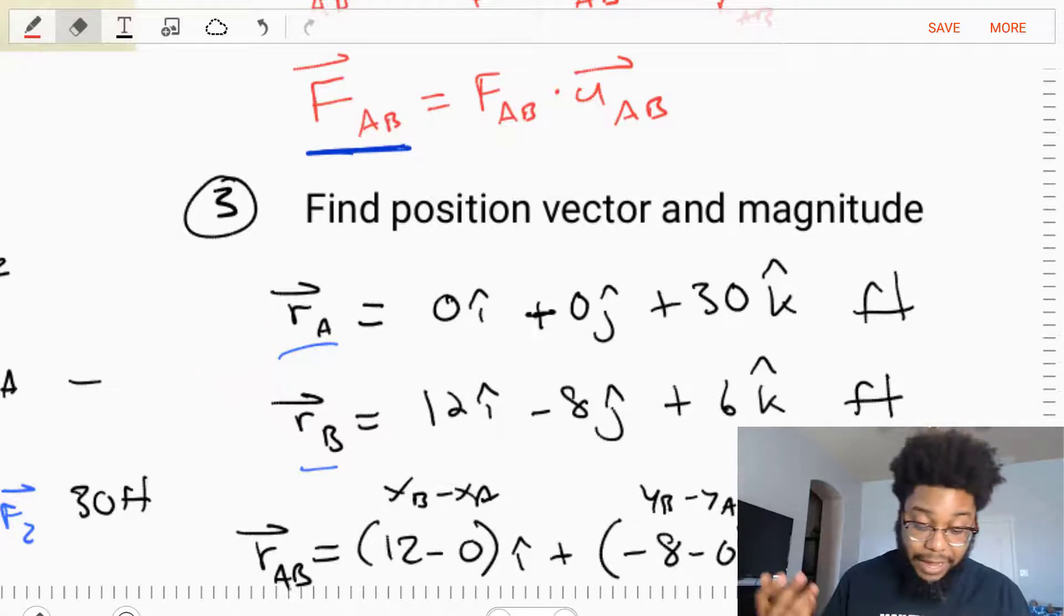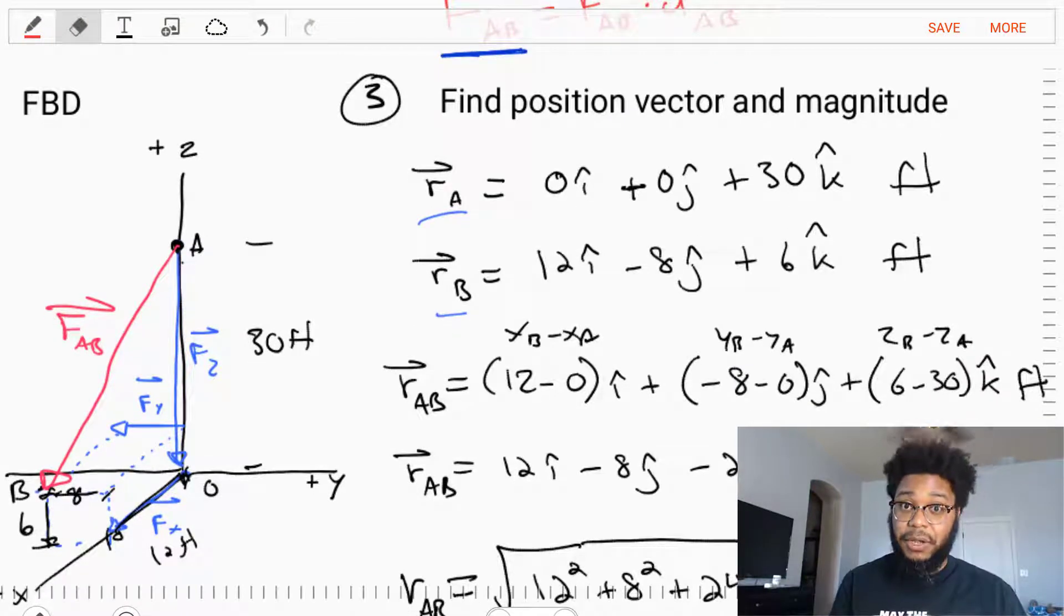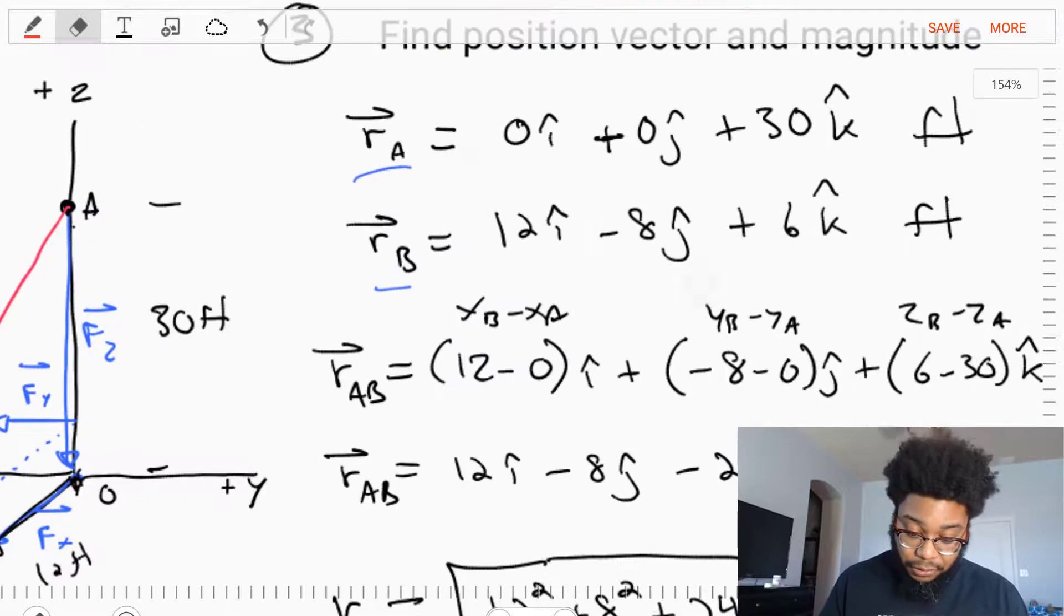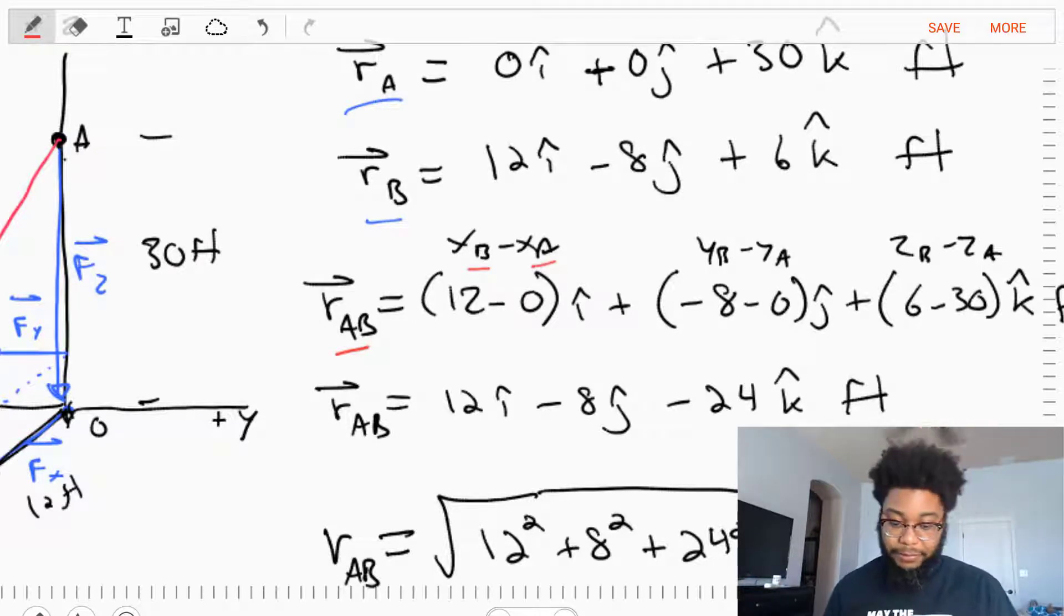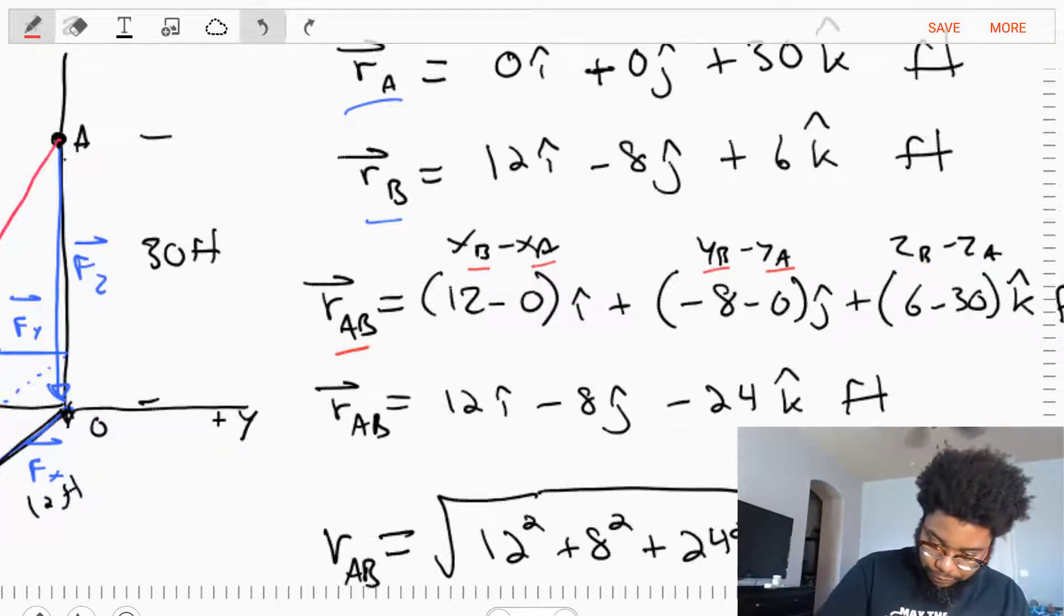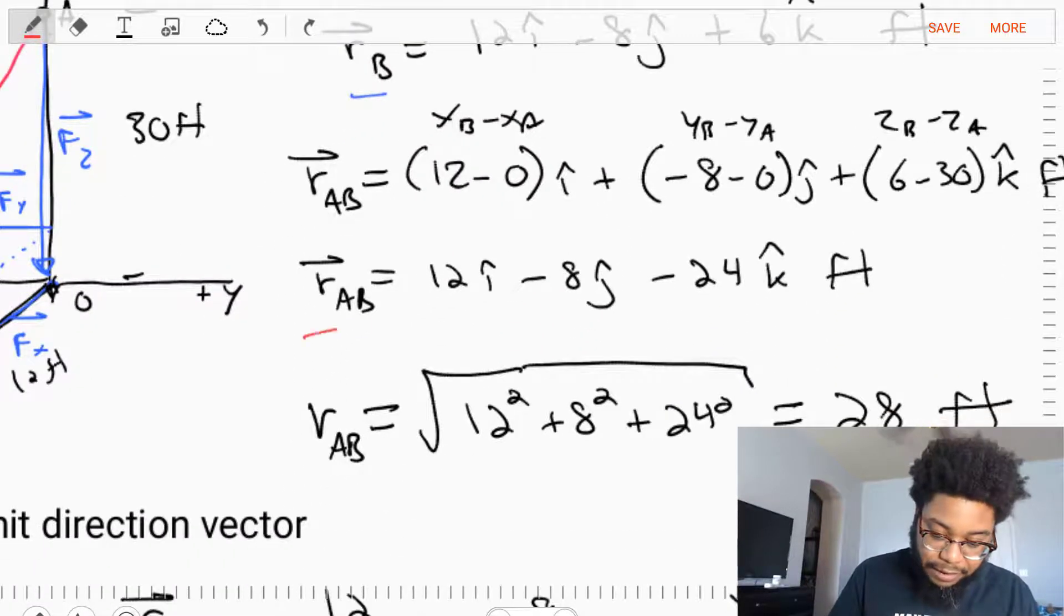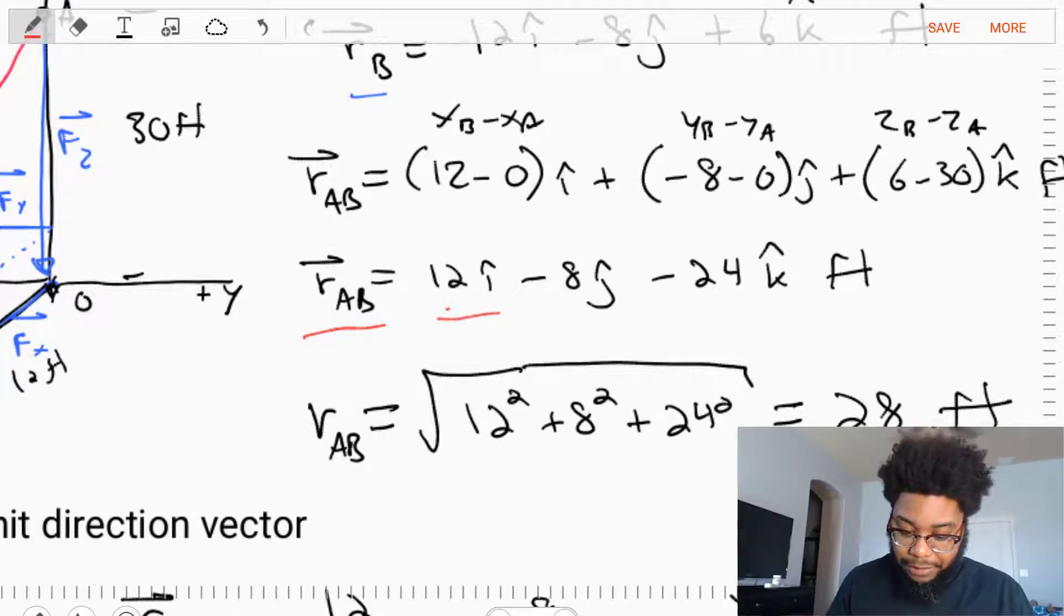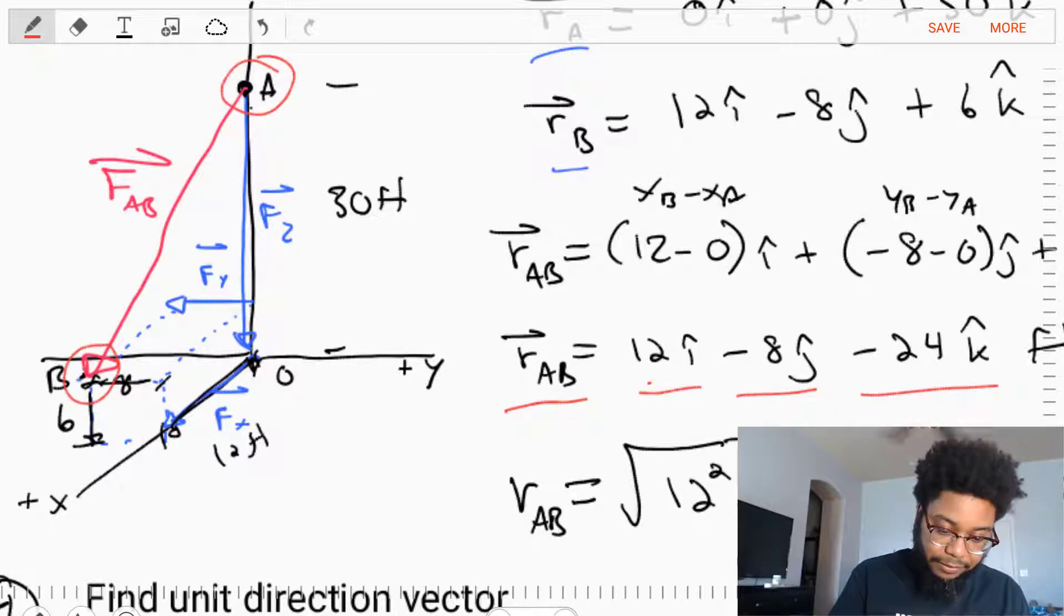So now we know the positions of A and the positions of B. Now let's get the position vector R directed towards B. Let's get that position vector, RAB. Where the position vector RAB is going to be the terms of B minus the terms of A. The X, the Y, and the Z terms. So we take RB minus RA and we find that RAB, the position vector, is equal to 12I minus 8J minus 24K feet. So that is position vector from A towards B.